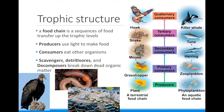Tertiary consumers eat secondary consumers, such as the snake eating the mouse. The highest trophic level is the quaternary consumers, who eat the tertiary consumers — this can be seen with the orca that eats the tuna. The animals in the highest trophic levels are usually larger and less numerous. For example, the hawk is much larger than the mouse, and there are typically far fewer hawks than mice.